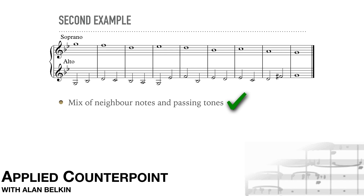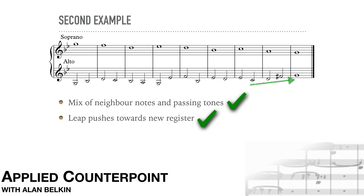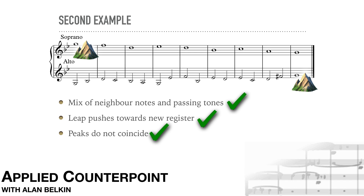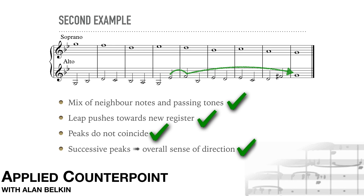After the scale, the leap in bar 4 pushes towards a new register. The line then stays in an intermediate register before rising again to the final G, which is also the highest note in the phrase. Once again, the peaks of the two lines do not coincide. Notice also the succession of the highest notes — E-flat and F in bars 4 and 5, then the high G at the end. When successive peaks rise step by step like this, it gives the phrase a nice overall sense of direction.